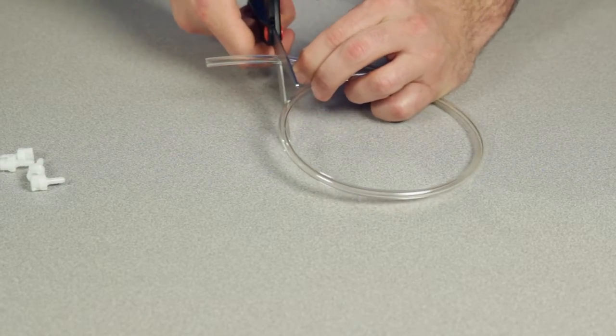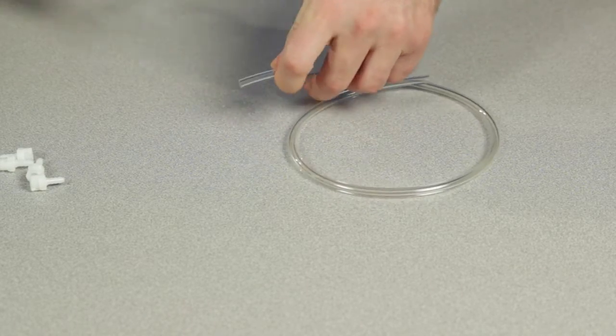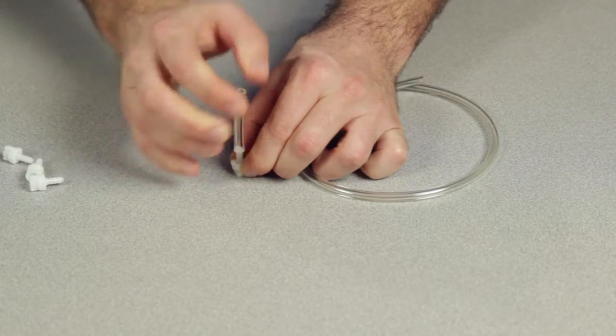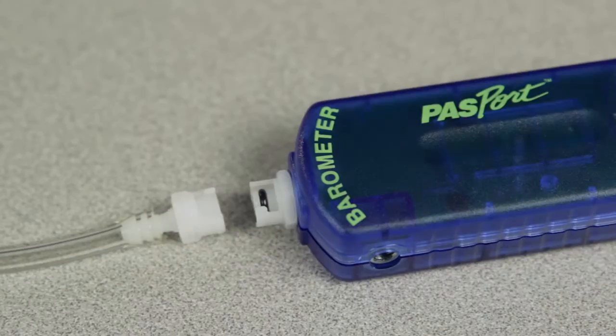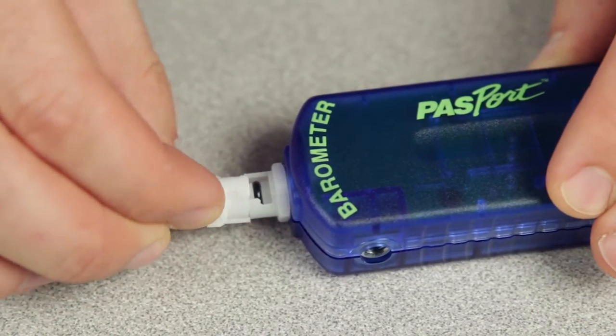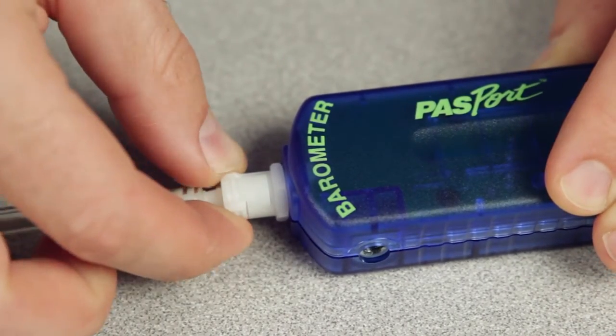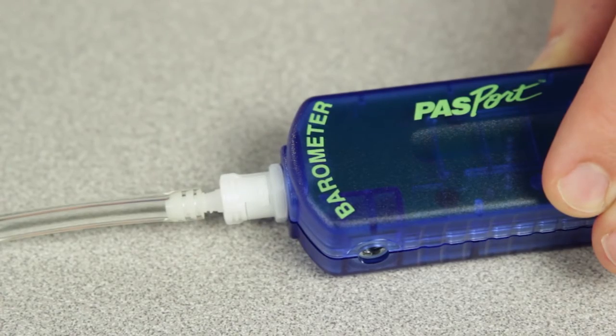To use the quick connectors, cut a desired section of tubing and press one end onto the barbed end of the connector. Then, slide the open end of the connector onto the sensor's pressure port and twist one quarter turn clockwise to lock it in place, forming an airtight seal.